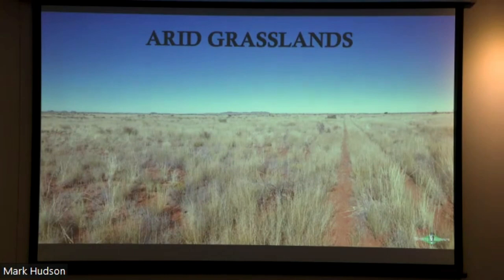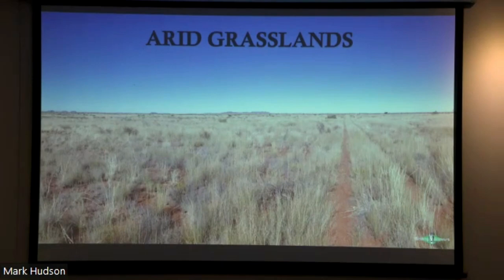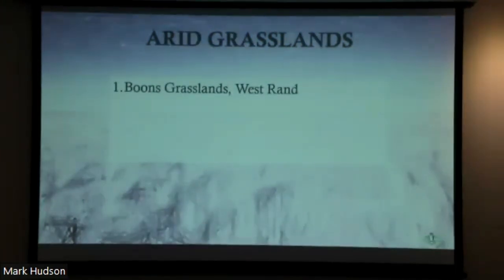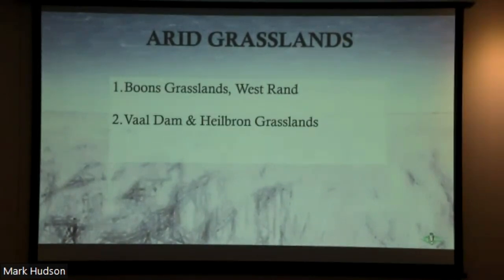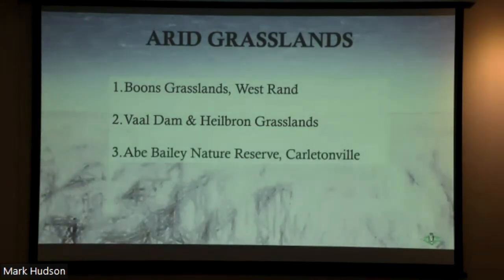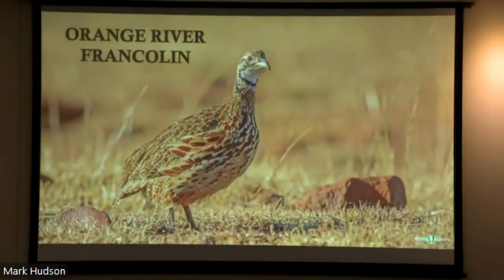Our last habitat type is the more arid grasslands, located primarily on the western side of the Highveld, west of Johannesburg — primarily arid due to a strong influence from the Karoo. Key sites include the Boons grasslands on the West Rand of Johannesburg — a truly superb, excellent site supporting a lot of these more arid Highveld species — plus the wider Vaaldam and Heilbron grasslands south of Johannesburg, and the A. Bailey Nature Reserve out in Carletonville. Orange River Francolin is first and foremost — exceedingly common in this area, with many covers existing and even the tiniest patches of arid grassland supporting vast numbers.